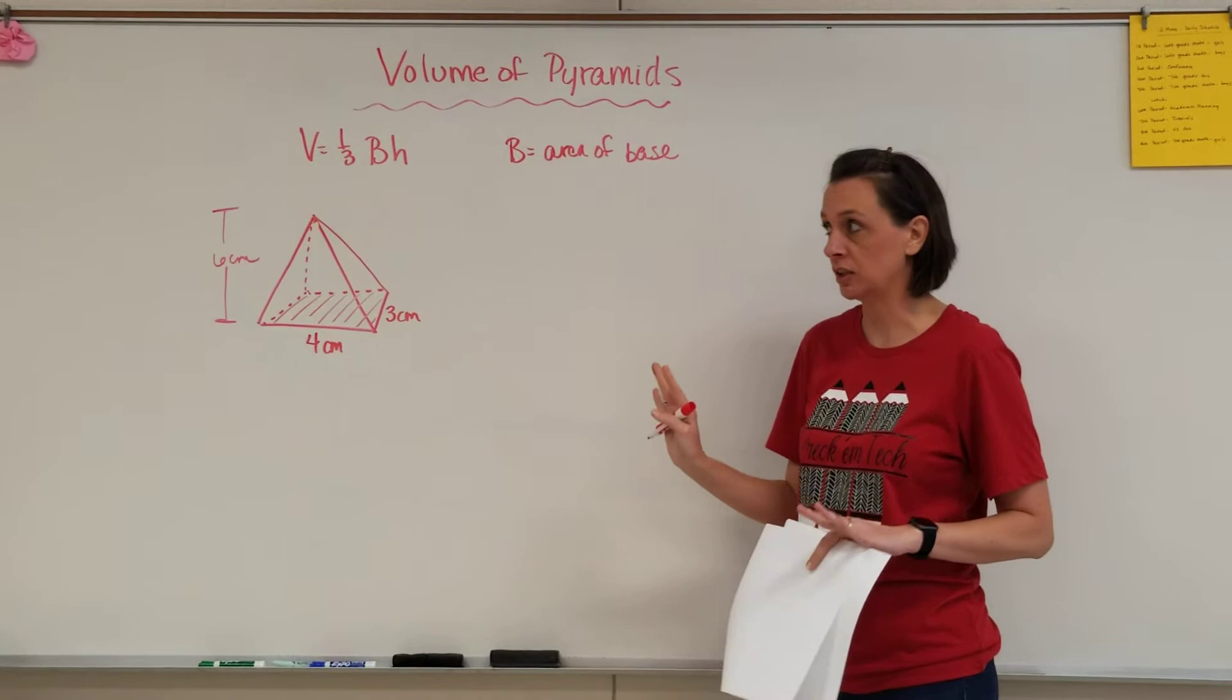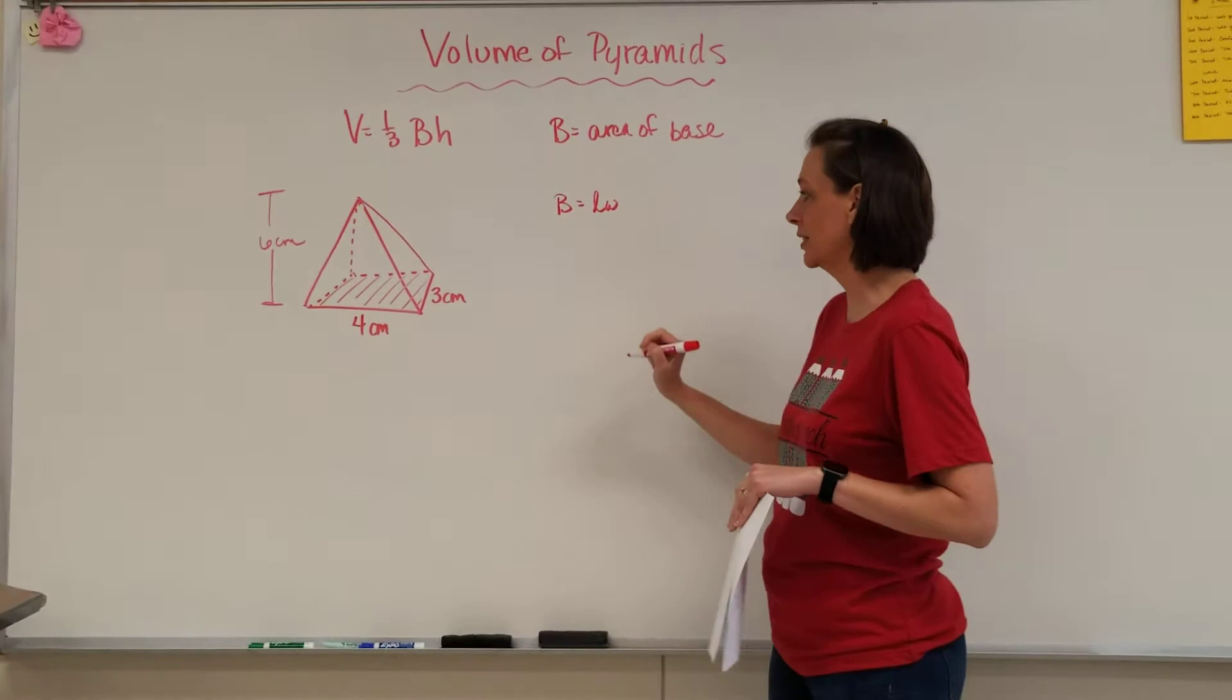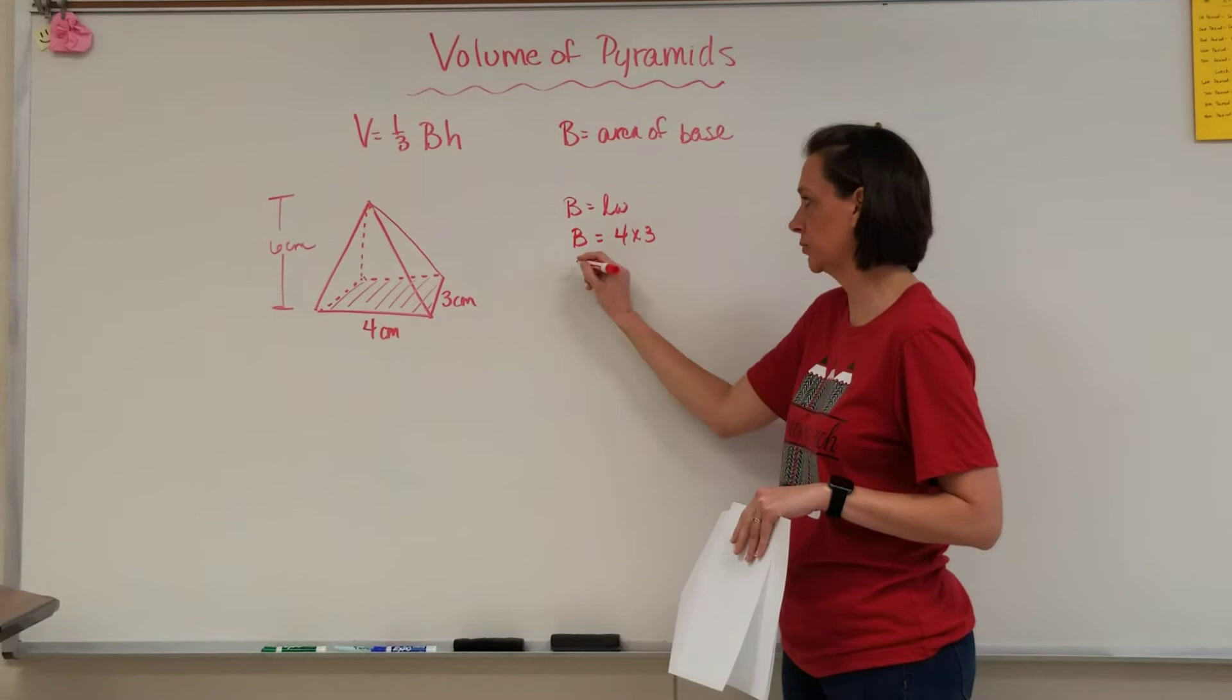So in this case, my length and width of the pyramid is going to be 4 times 3. So my base is going to equal 12. So now that I have that, I can plug it back into my volume formula.